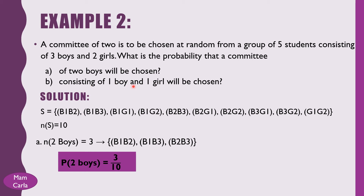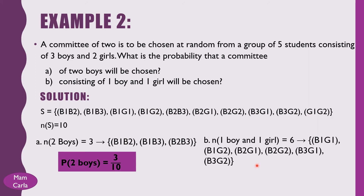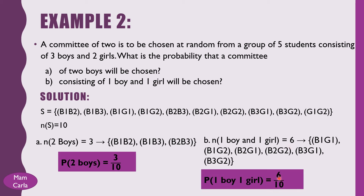What about selecting a committee consisting of 1 boy and 1 girl? The outcomes are: (B1,G1), (B1,G2), (B2,G1), (B2,G2), (B3,G1), (B3,G2). The cardinality of selecting 1 boy and 1 girl is 6. So the probability equals 6 over 10, or simply 3/5.